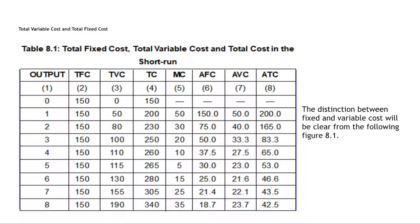When output is 1, total fixed cost is 150, total variable cost is 50, and total cost is 200. Marginal cost is 50 — we will discuss the concept of marginal cost later. Average fixed cost, when you divide total fixed cost by the number of units, is 150. Average variable cost is 50, and average total cost is 200.